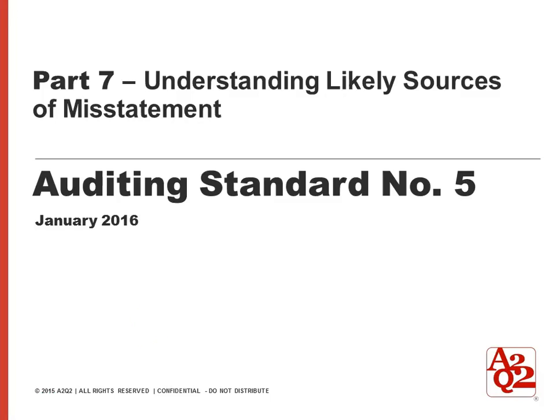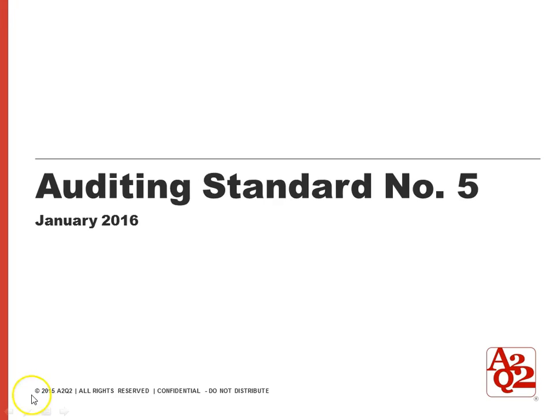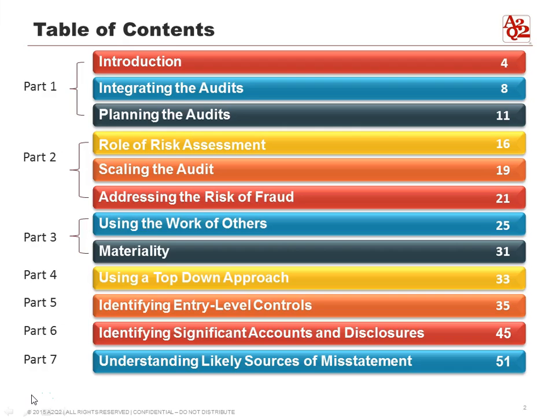Welcome to Part 7 of Auditing Standard Number 5. This is understanding likely sources of misstatement. Because AS5 has over 100 pages, which is really heavy reading, I've made it easier by breaking it down into smaller parts and giving you the CliffsNotes version. This training gives context to SOX 404 requirements — it's meant to be an easy-to-understand breakdown of dense words.